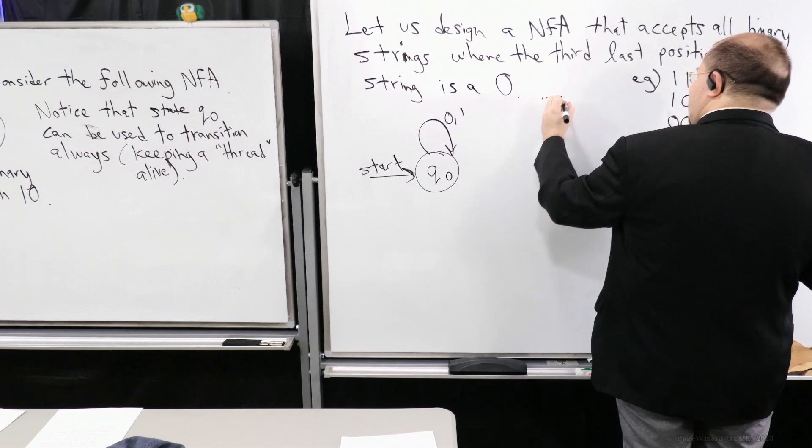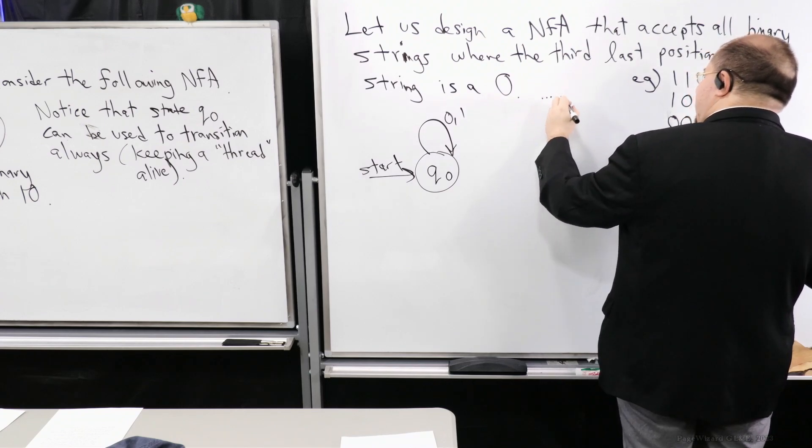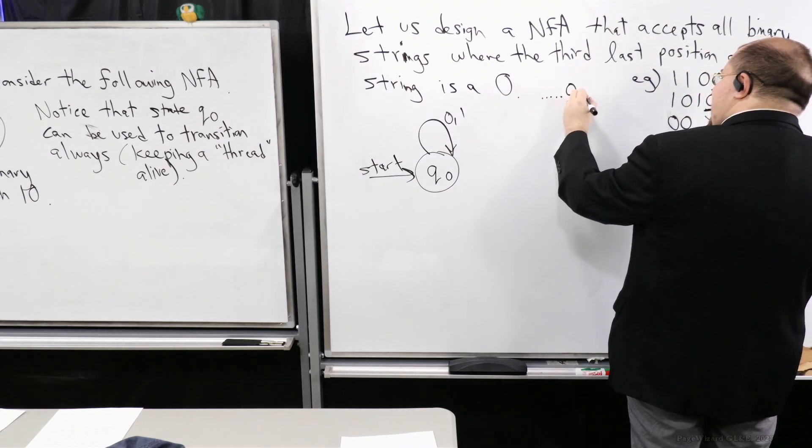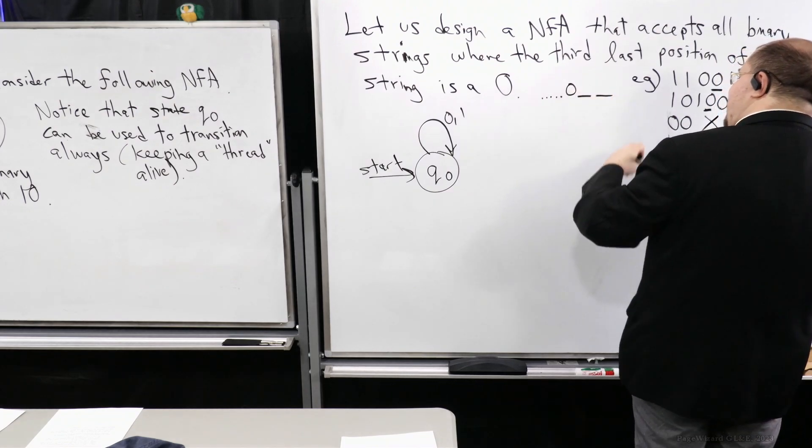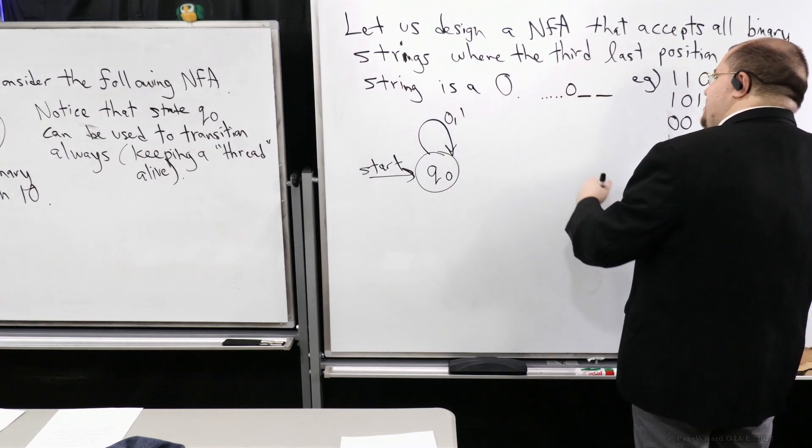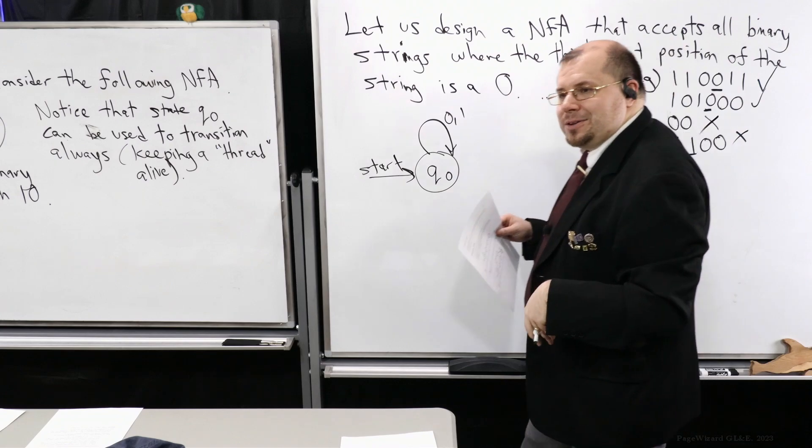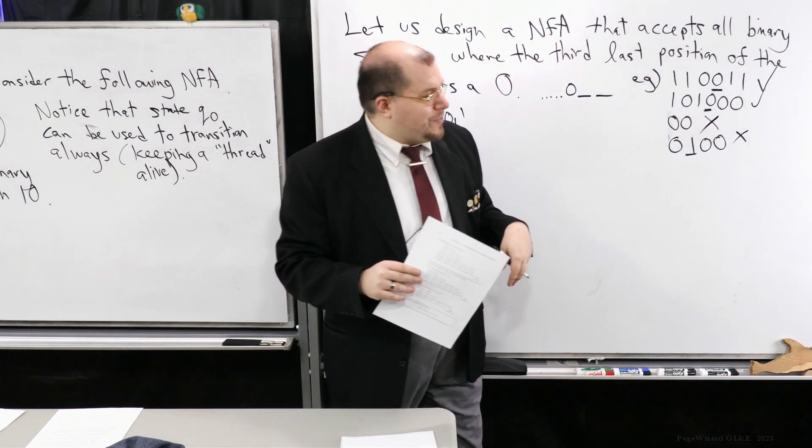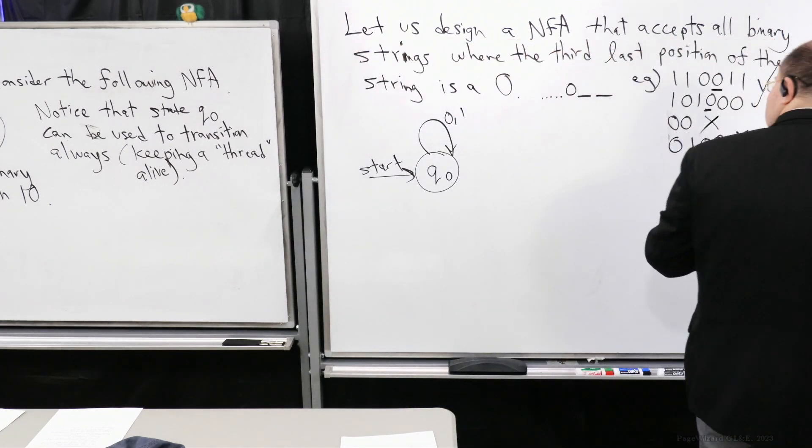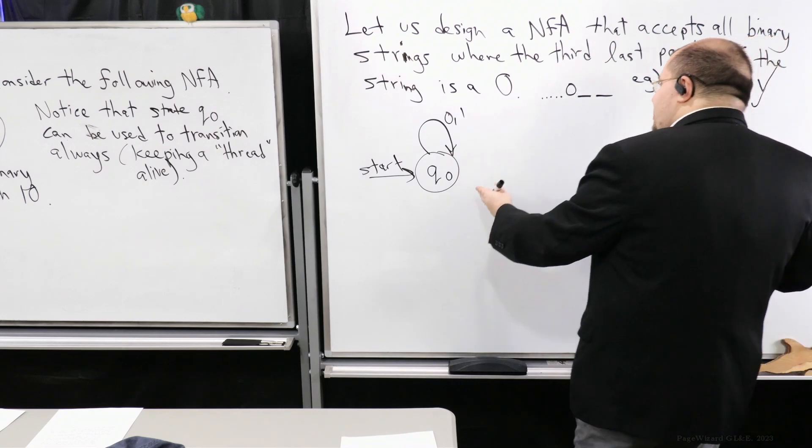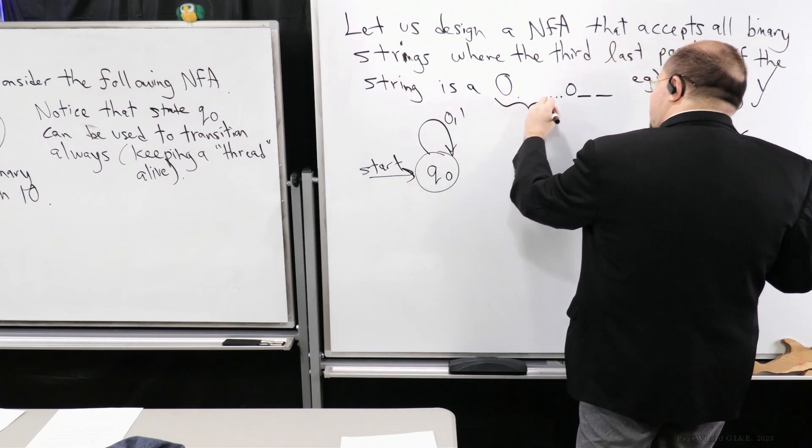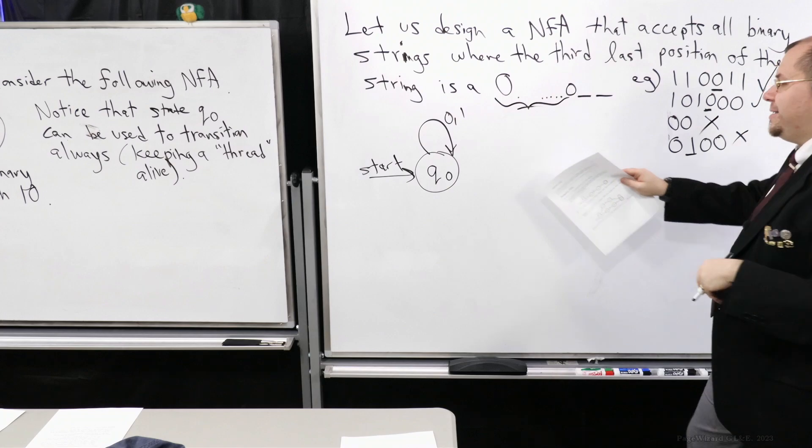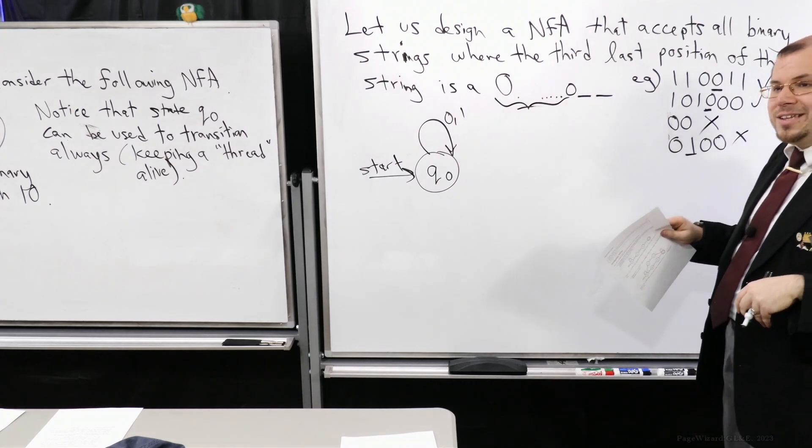So it's any number of 0s and 1s, then you see a 0, and then you have a 0 or a 1, and a 0 or a 1, right? But anything after that, not allowed, not allowed. That's the form of a string that gets accepted. So this will allow us to keep this part. So we can keep this part as long as we have this, because this will allow us to keep producing guesses.